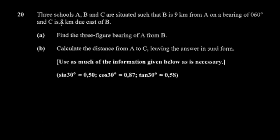We're now on question 20, which is on bearing. You have three schools situated such that B is nine kilometers from A at a given bearing — this is called three-figure standard bearing, meaning it's taken from the north going clockwise. You're also given that C is eight kilometers due east of B.